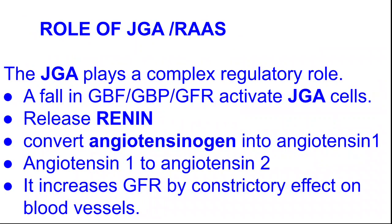The role of the juxtaglomerular apparatus is also associated with the RAS — the renin-angiotensin-aldosterone system, or simply the renin-angiotensin mechanism. The juxtaglomerular apparatus plays a complex regulatory role. A fall in glomerular blood flow, glomerular blood pressure, or glomerular filtration rate activates the cells present in the juxtaglomerular apparatus, which release a hormone known as renin. This renin converts angiotensinogen present in the blood to angiotensin 1, which is further converted into angiotensin 2.